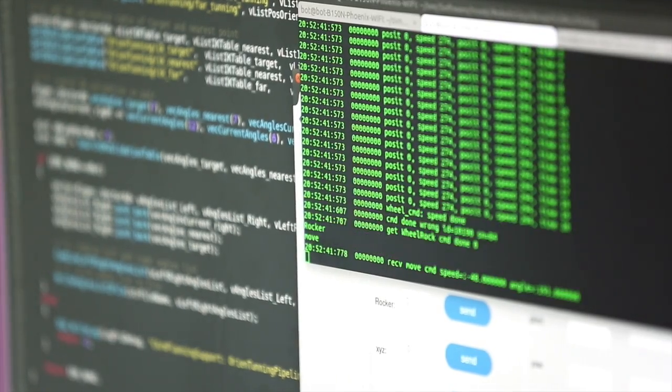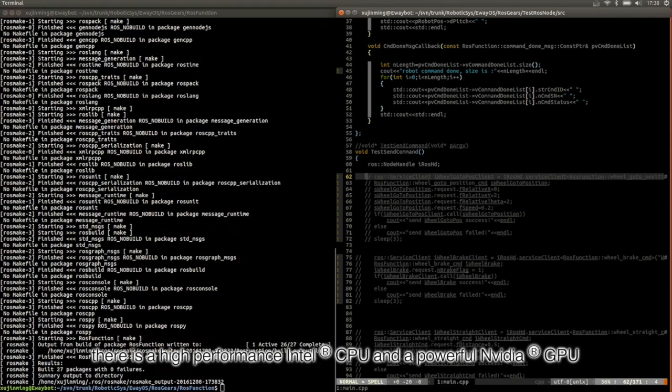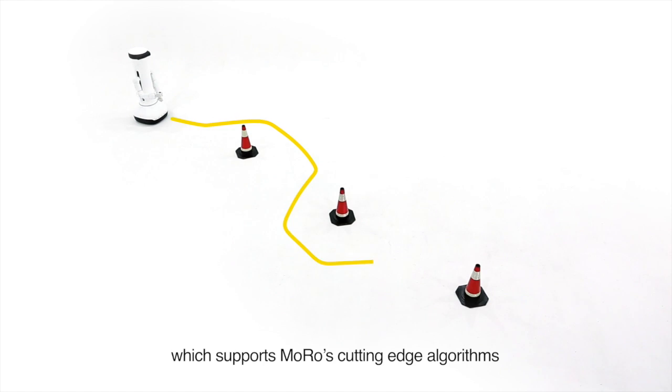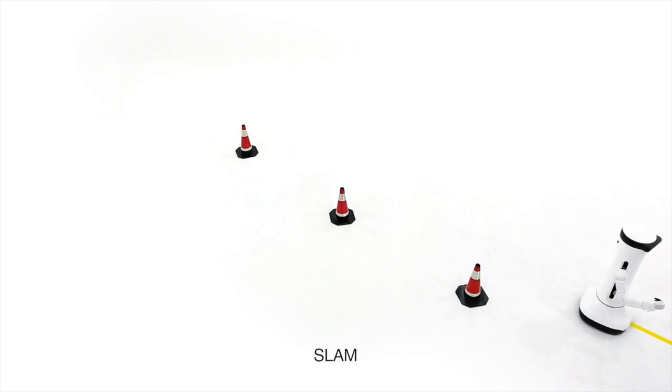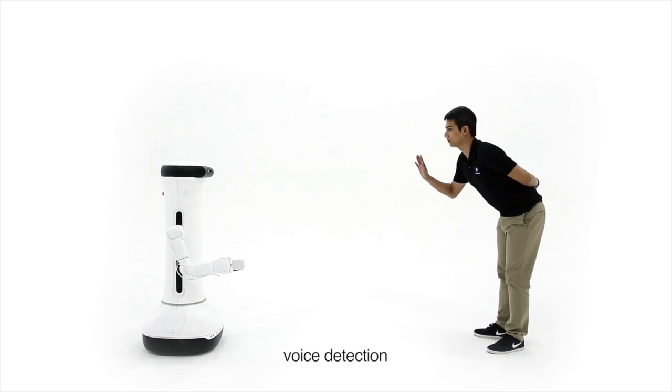Inside Moro, there is a high-performance Intel CPU and a powerful NVIDIA GPU, which supports Moro's cutting-edge algorithms for motion planning and control, SLAM, face recognition, object detection, voice detection, etc.